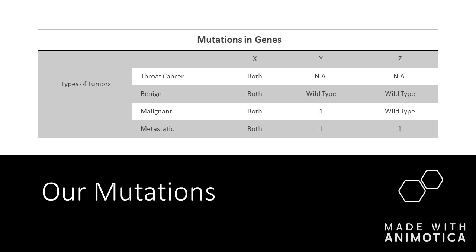For throat cancer, we knew that there was a family history where mutated gene X led to throat cancer. For benign tumors, we saw that both X alleles were mutated and we had a wild or normal type for genes Y and Z. For malignant tumors, both X genes were mutated and one Y gene was mutated with a normal Z. Then for metastatic, we had both X genes mutated, one Y mutated, and one Z mutated.